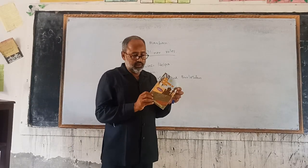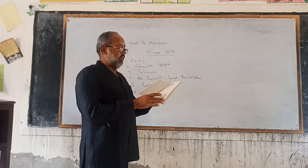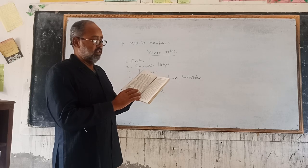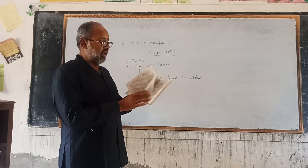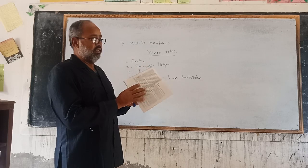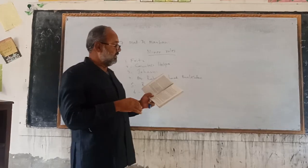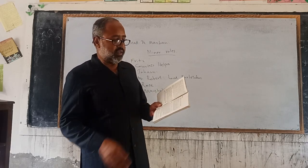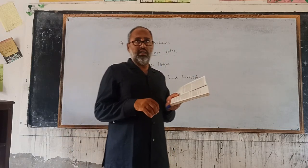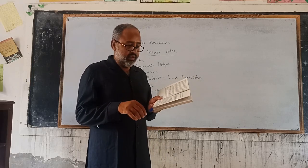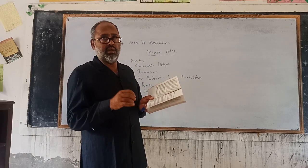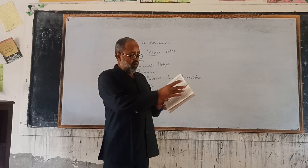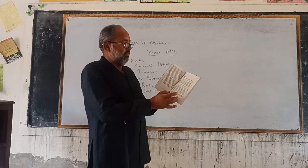This is the book, The Prisoner of Zenda. This is the introduction of the novel and its writer, and this is Chapter 1. The title of Chapter 1 is 'The Rassendils' — with a note on the Elfburg family. The Rassendils are of London and the Elfburgs are the royal family that rules Ruritania.